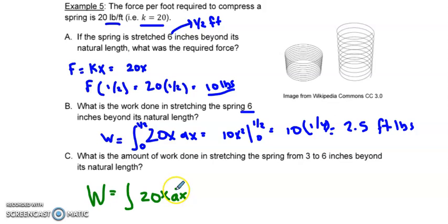...so we just have 20x dx, but now we're going from one-fourth of a foot to one-half of a foot beyond the normal or equilibrium length of the spring.